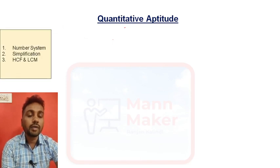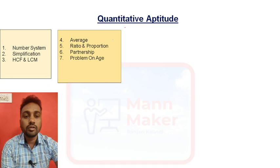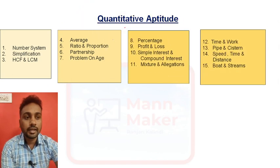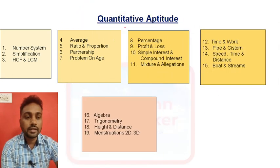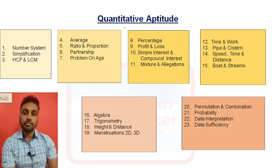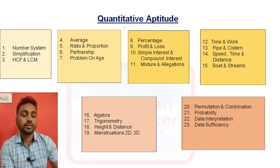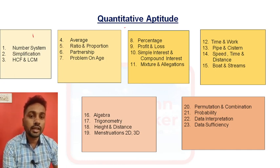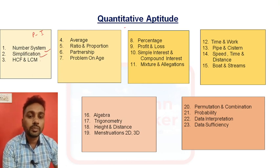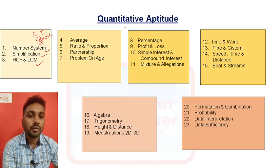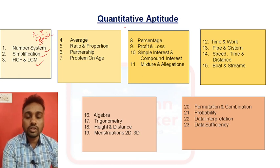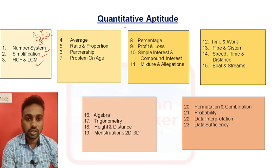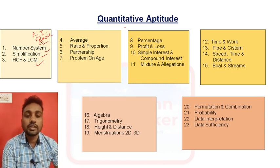We can divide quantitative aptitude into six sections. In section one — part one — number system, simplification, and HCF and LCM. This is the basic foundation for aptitude. If you know these basic things, then you can solve any aptitude question. This is basic mathematics you have to know.